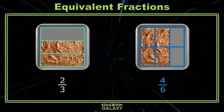For instance, here we have two pans of brownies. One says it's two-thirds of the pan, and the other one says it's four-sixths of the pan. Well, if I could make that two-thirds into six, I could easily see that they are both four-sixths.